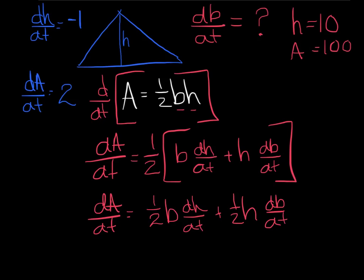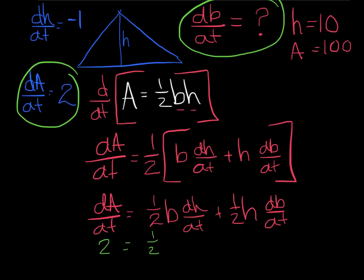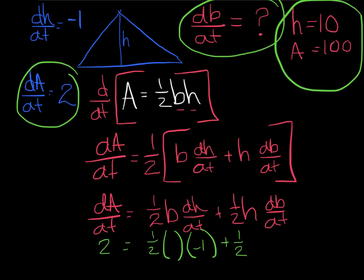Now that I've derived, it's fair game to plug everybody I know in. We know dA/dt is 2 and the only thing I shouldn't know is dB/dt. It doesn't look like I know B at the moment, so I'll have to find it. dH/dt is negative 1, and they specifically want this when the height is 10.